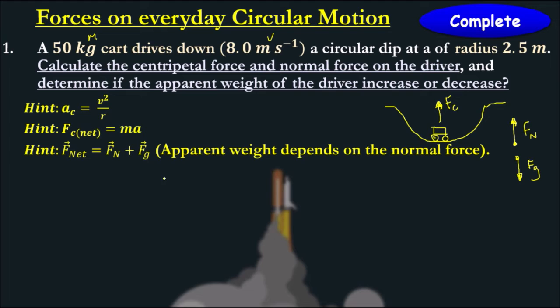What we need to firstly work out is our net force, which is also our centripetal force equals to the normal force plus Fg. So mv squared over R, 50 times 8 squared over 2.5. So 1,280 newtons equals to our centripetal force. That answers one of our questions.